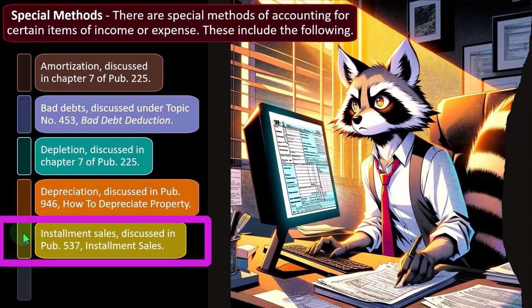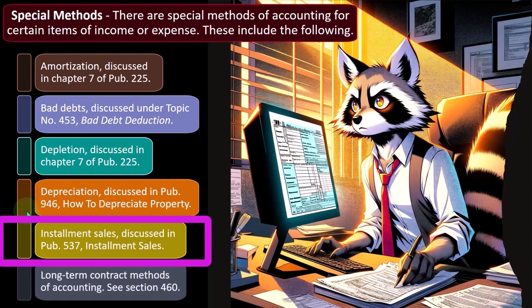Installment sales are discussed in Publication 537, Installment Sales. That's a type of sales structure that could be set up, and there could be special rules with regards to installment sales — which, while somewhat unusual, are not so rare that those types of sales couldn't come up.